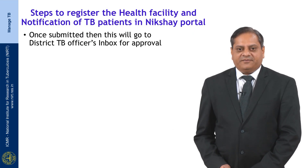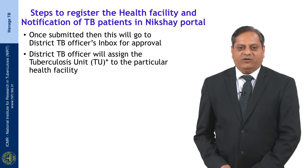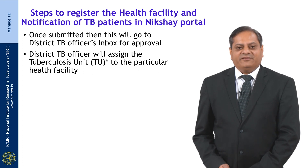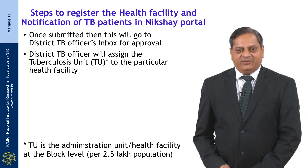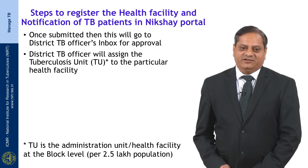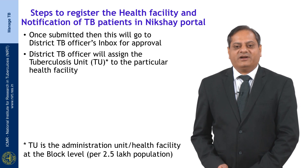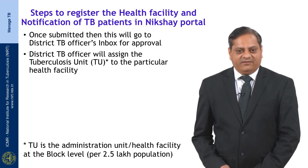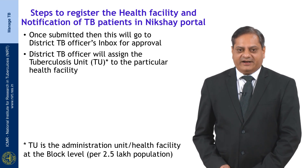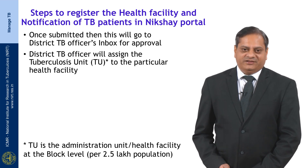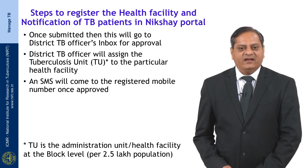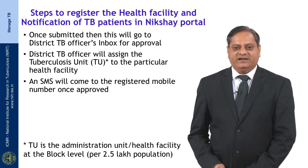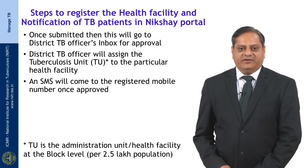After registration, once it is submitted it will go to the District TB Officer's inbox for approval. The District TB Officer will assign the tuberculosis unit. This is one small step added to facilitate time-to-time support from the District TB Officer through the tuberculosis unit, which is an administrative unit usually at the block level covering on average 2 to 3 lakh population. The District TB Officer will ensure which tuberculosis unit will be assisting the health facility for notification and follow-up actions. On completion, an SMS will be sent to the registered mobile number once approved, and it does not take more than 24 to 48 hours.